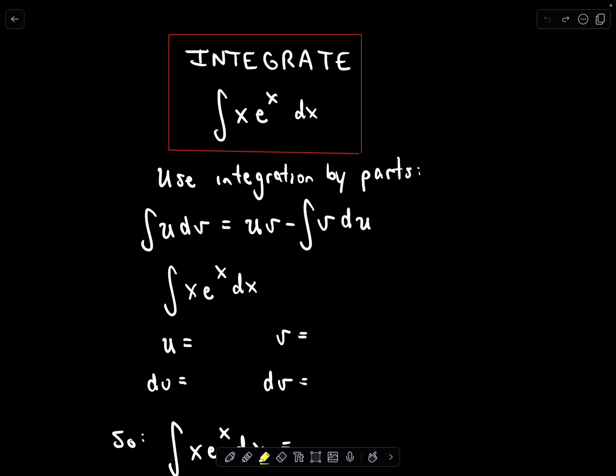So recall, integration by parts is the integral of u dv equals uv minus the integral of v du.